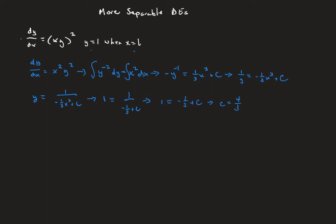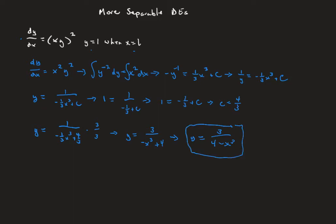Now we'll plug that back into the expression for y: y = 1 over (negative one-third x³ + four-thirds). On an AP exam question, that would be fine. But your math teacher would prefer not to have fractions in fractions. If we multiply the numerator and denominator of the big fraction by 3, we get y = 3 over (negative x³ + 4), or written more neatly: y = 3 over (4 minus x³). That is our particular solution.